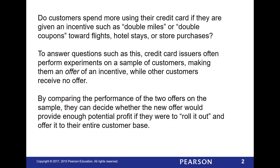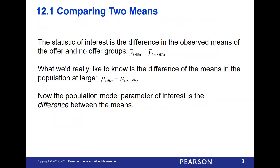Do customers spend more using their credit card if given an incentive such as double miles or double coupons towards flights, hotel stays, or store purchases? To answer questions like this, credit card issuers would perform experiments on a sample of customers — a test offer group compared to customers who receive no offer — and then compare the means between those two groups. The two means we'd look at are mean spending with the offer minus mean spending with no offer.